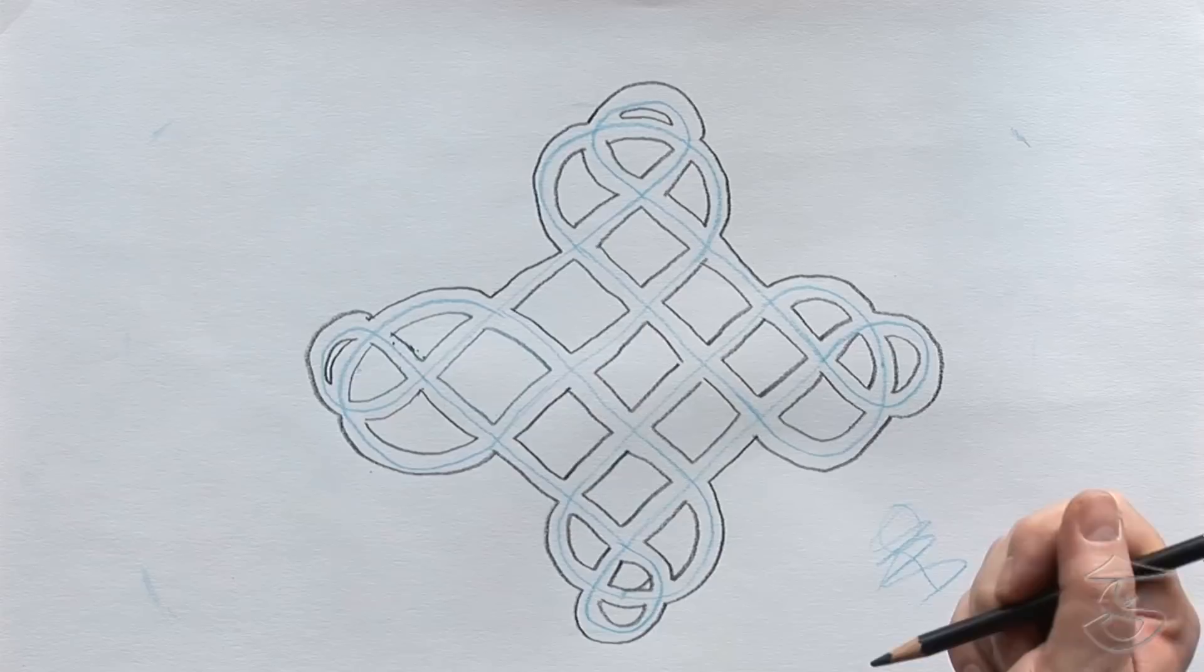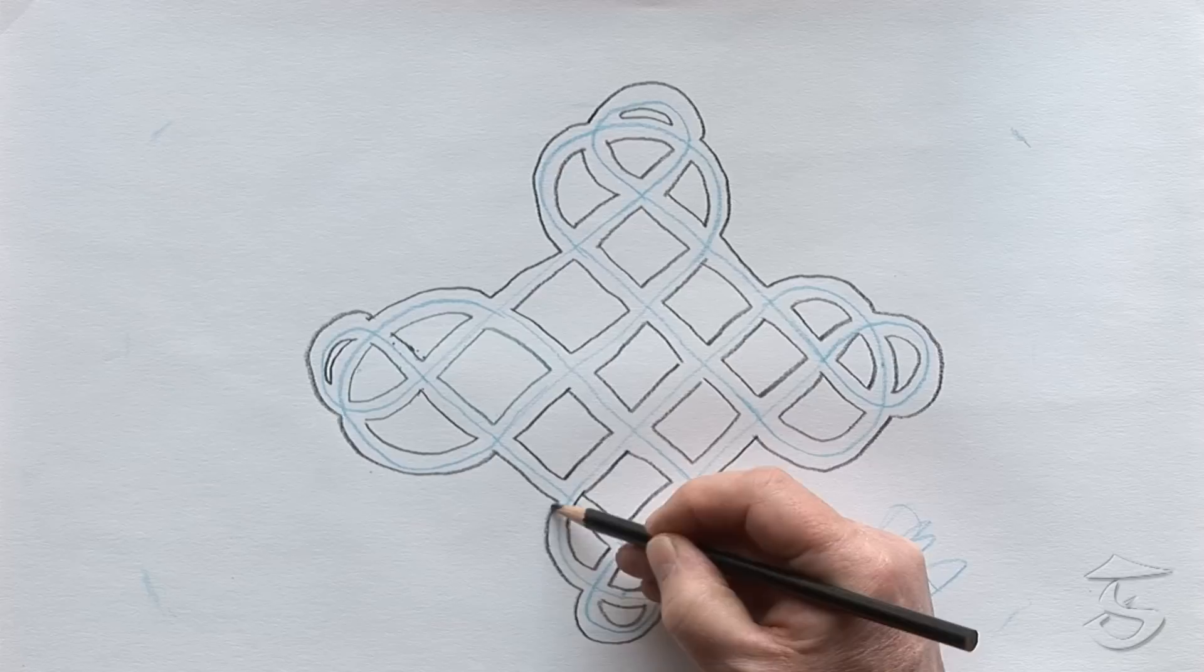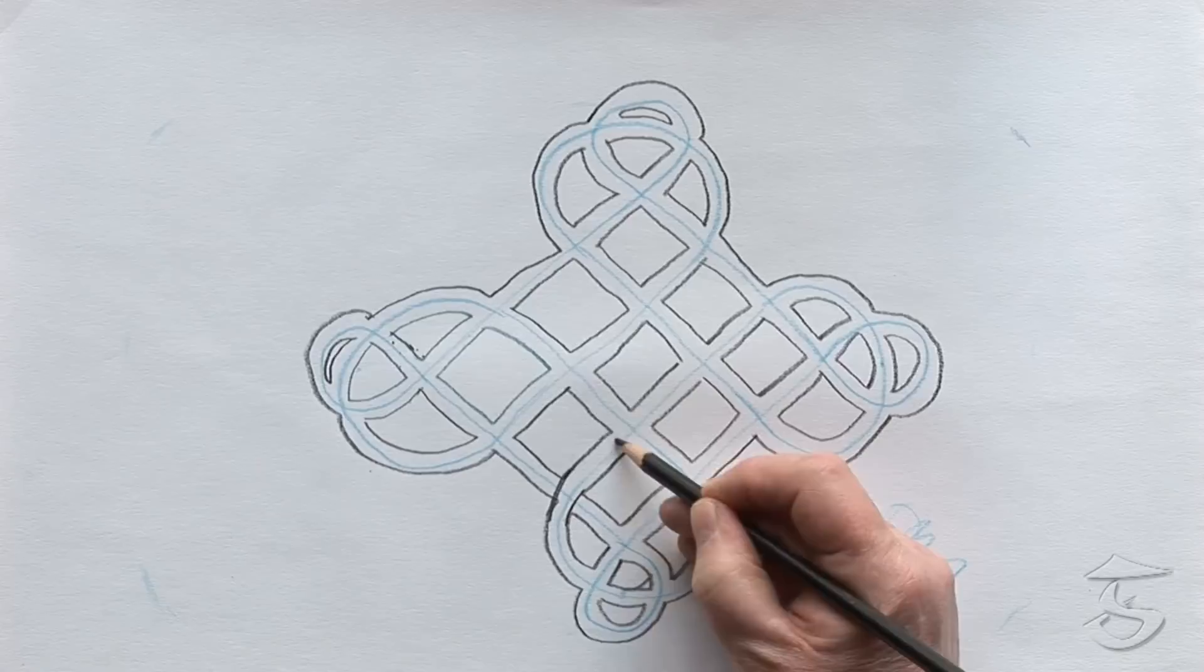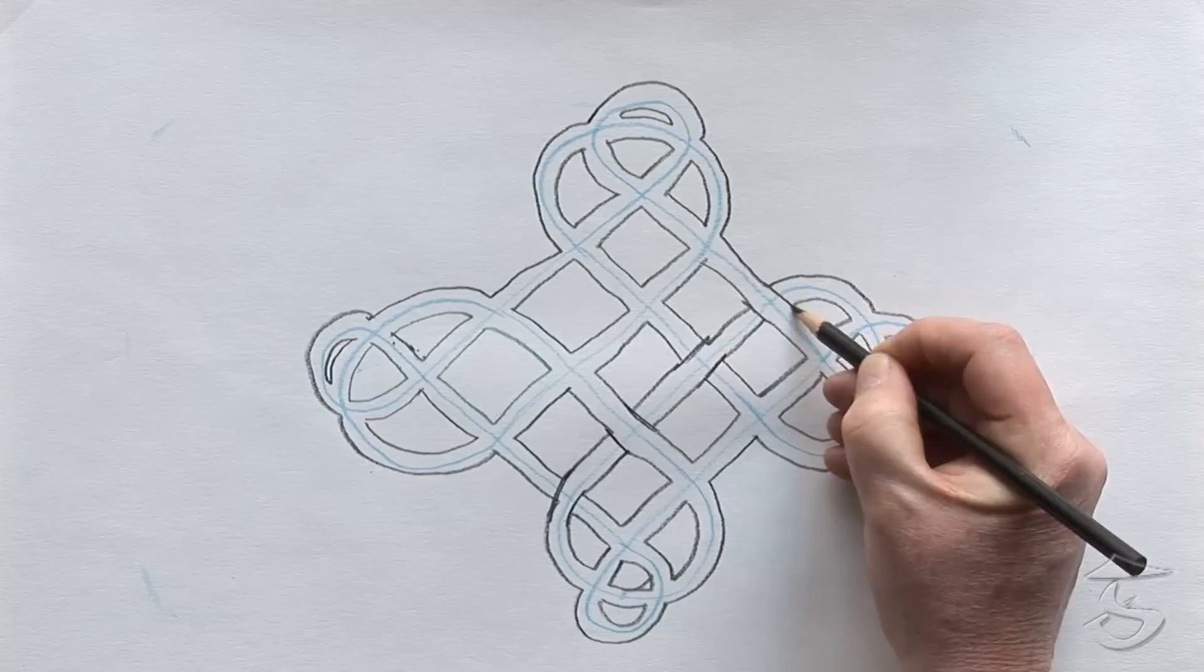Now we're going to start the unders and overs. Anywhere you start is okay. But once you start, you need to stay on the path. I'm arbitrarily picking this spot here. We're going over. And we're going under. And we're going over. And we're going under. It's on, off, on, off.